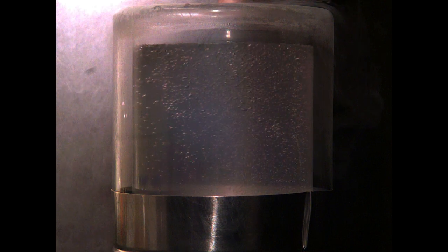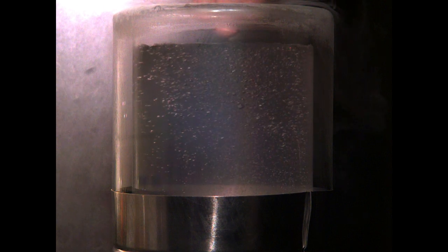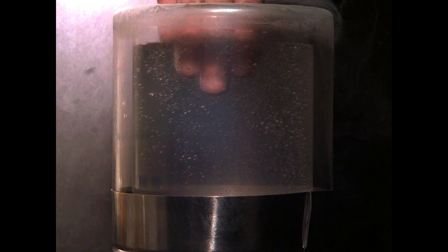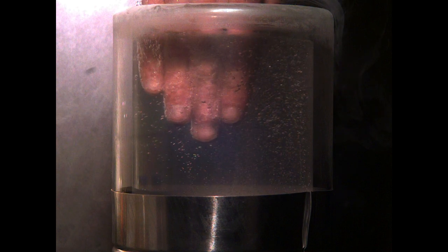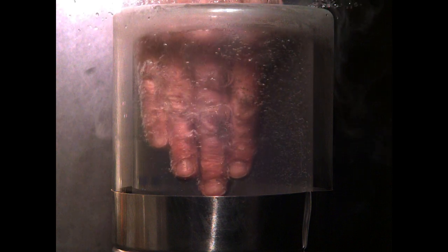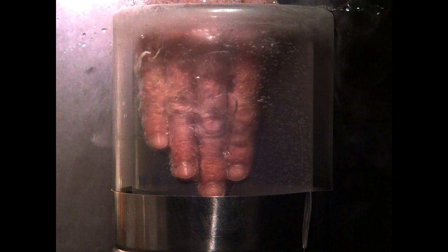Once again, we captured some super slow motion video of the process. Here's my hand entering the liquid nitrogen. If you look carefully, you can see a lot of vapor around my hand. Bubbles form all the way around my hand, insulating it from the very cold liquid nitrogen.